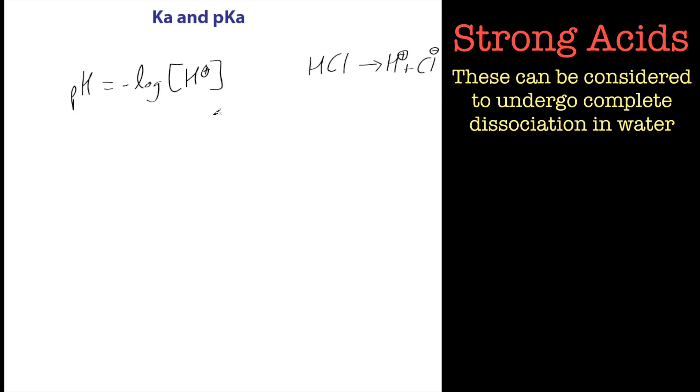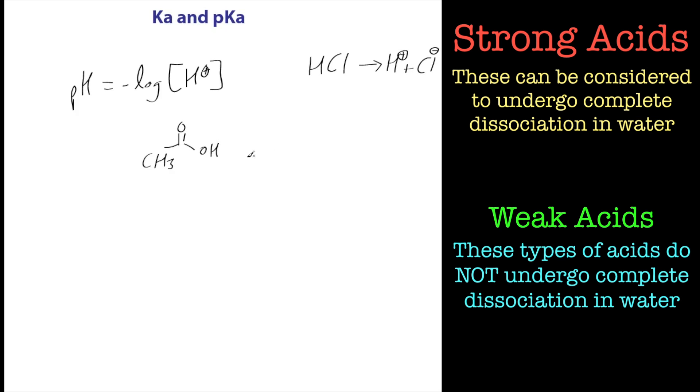For weak acids, things like ethanoic acid, so this is ethanoic acid, this doesn't come off completely, so you don't get complete dissociation.